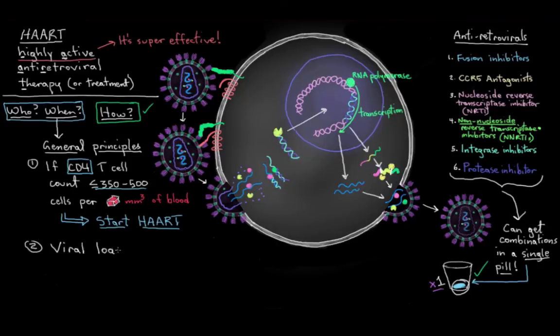Viral load is important too. If the amount of HIV in your bloodstream is higher than 100,000 copies per milliliter of blood, it's time to start HAART.